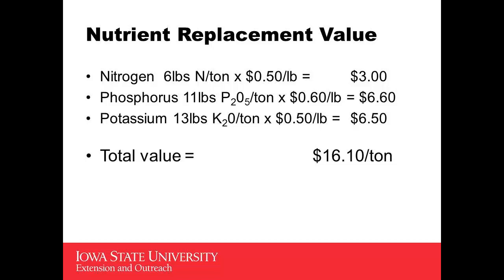Phosphorus is 100% available, and K is 100% available. Using only 30% N availability, 19 pounds of N times 30% gives about 5.7 pounds, rounded to 6 pounds. At 50 cents a pound, that's $3 per ton. Phosphorus at 100% — all 11 pounds available at 60 cents a pound — is $6.60. Potassium at 100% — 13 pounds times 50 cents a pound — is $6.50. Adding it all up, this manure is worth about $16.10 a ton if all nutrients are needed for crop production.